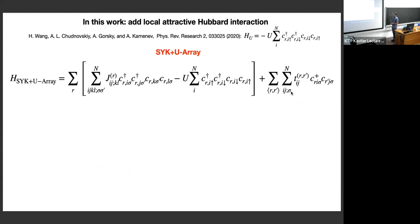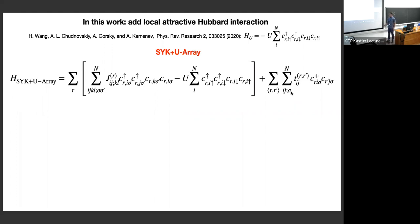Extensions were proposed in several works; more or less all introduce an effective attraction between electrons. The work I'm considering is no exception — we introduce it in the simplest possible form: a local attractive Hubbard U term acting at each site of a given grain. This is minus U, with all those C operators residing at a single site of a given grain with spins corresponding to a Cooper pair. This is the only modification to the SYK array.